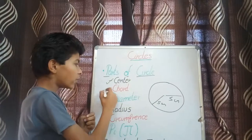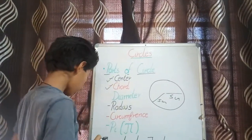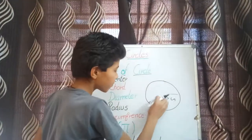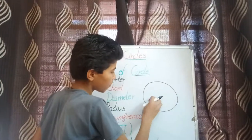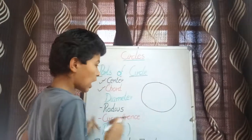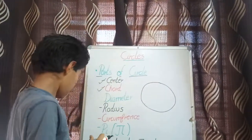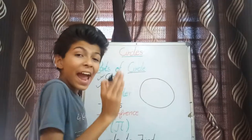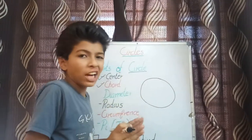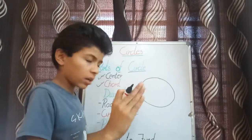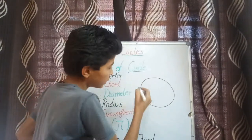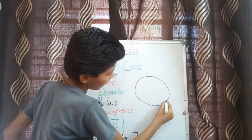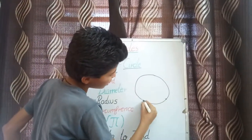Then we have the chord. What is a chord? A chord is a line segment which joins any two points on the circle.